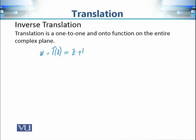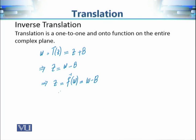In this case T(z) = z + b. Since the function is one-to-one and onto, we can solve for z in terms of w, which gives z = w - b. This implies that the inverse function is w - b, and using the same variable, T⁻¹(z) = z - b. This is the inverse translation: when we apply T we move through vector b, and when we apply the inverse we move back along vector -b — that is why they are inverses of each other.